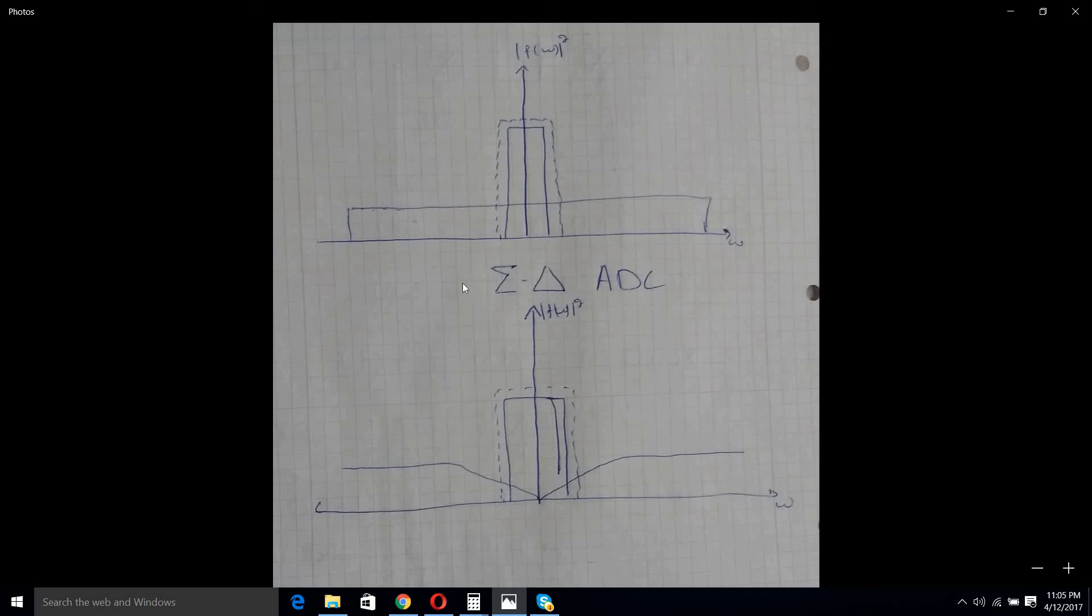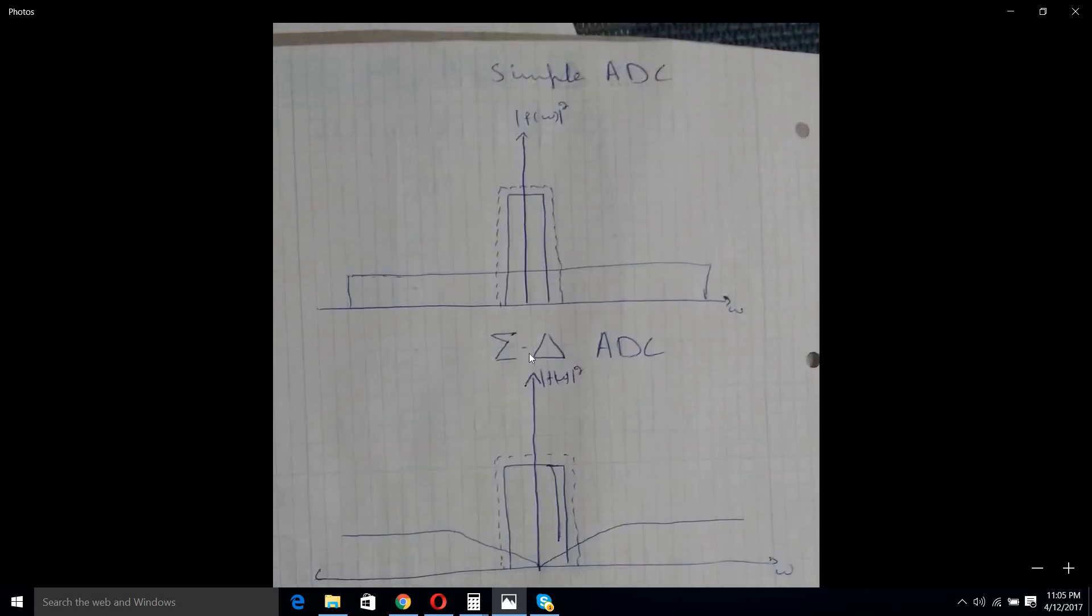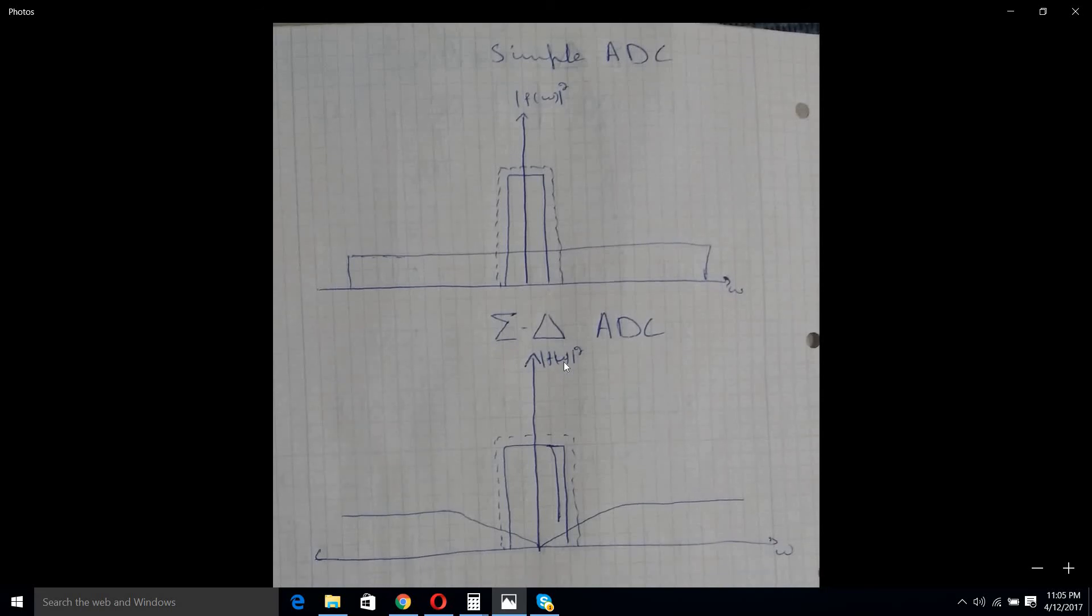For a similar oversampling rate as that of a simple ADC. I hope this explains a lot. Thanks for watching, bye.